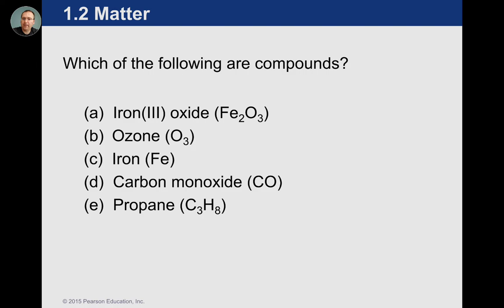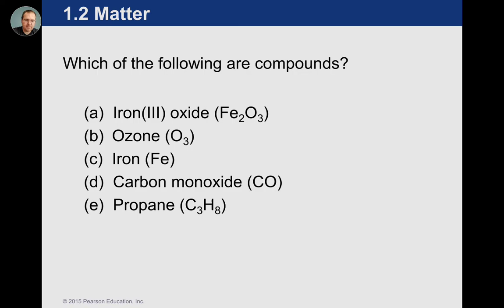Ozone is O3 — that and iron both have only a single capital letter, so that's just elemental. Those are elements on the periodic table, although ozone has three atoms of the same element. Carbon monoxide and propane both have two capital letters, so in those situations the compounds are the ones that have multiple capital letters — and that's what we're looking for.